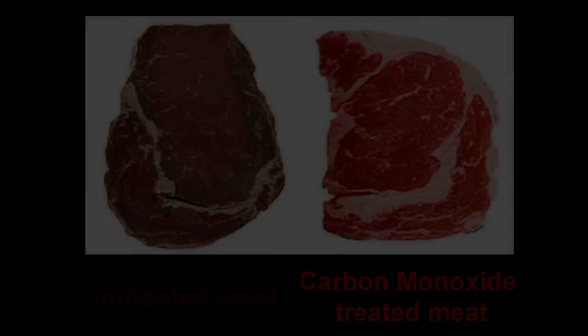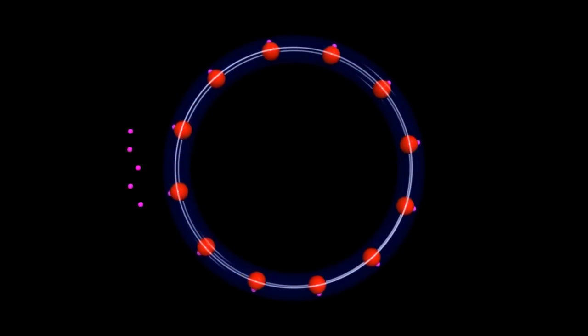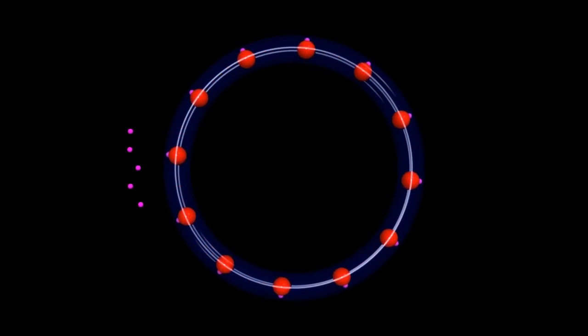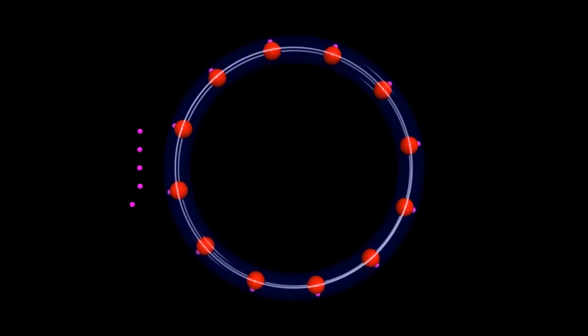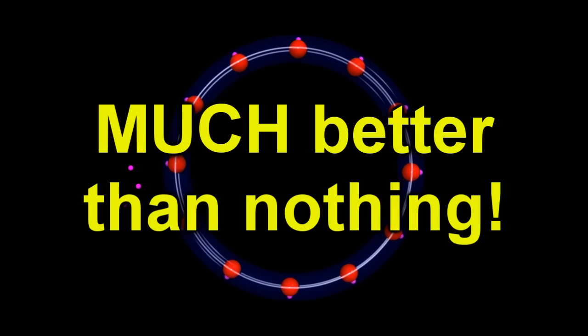But this does very much highlight how evolution happens at a molecular level. I mean, just say for instance that there was a selective advantage to being able to move carbon monoxide through your blood. Hemoglobin would suck at doing this because it binds carbon monoxide far too strongly. But it would be a damn sight better than nothing at all. And evolution is a really good improviser like this.